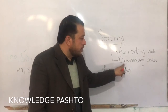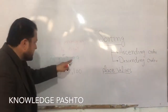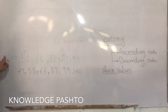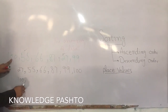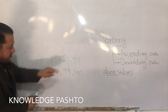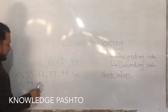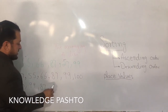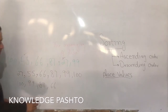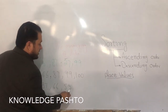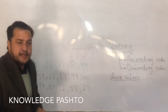Starting from 0 to 3. Decreasing down — if we go descending, it goes from 100 down. So descending: 100, 99, 87, 66, 55, 25, 27. That is descending order.